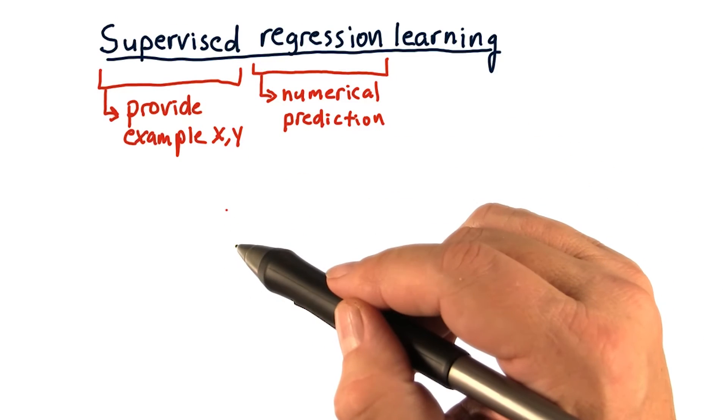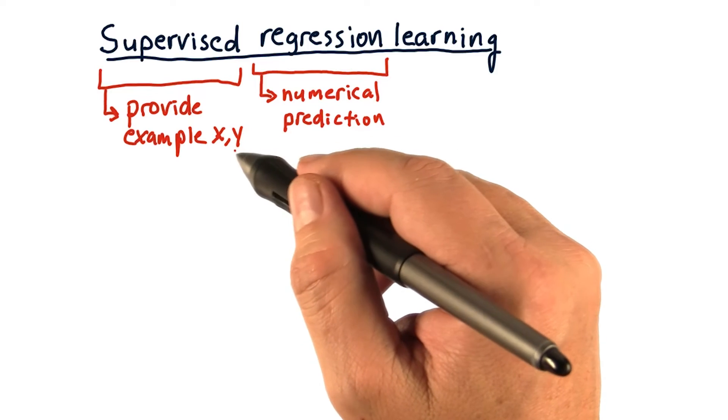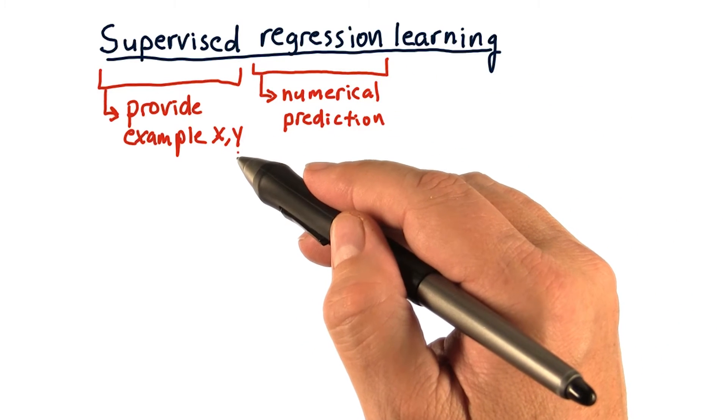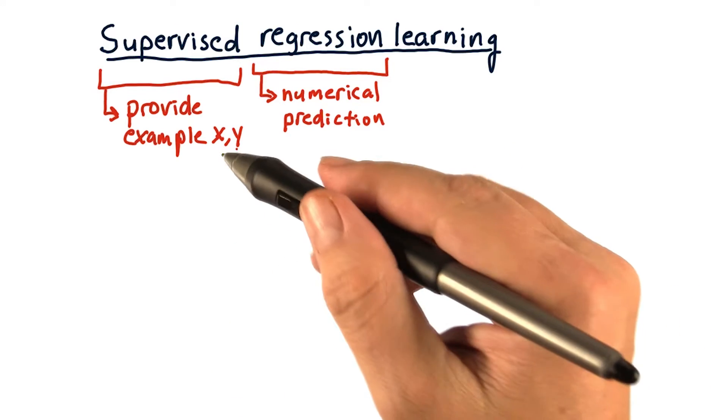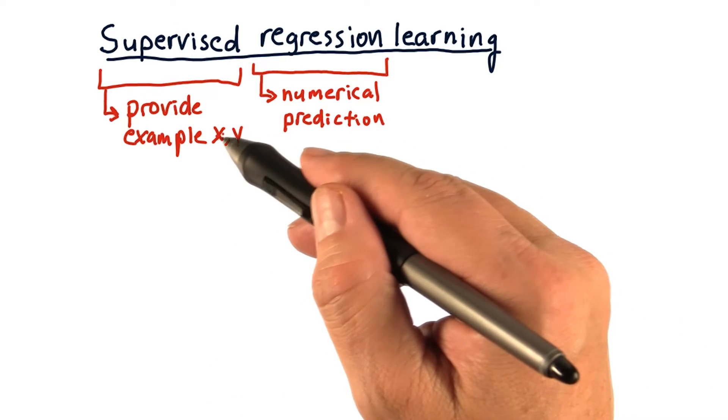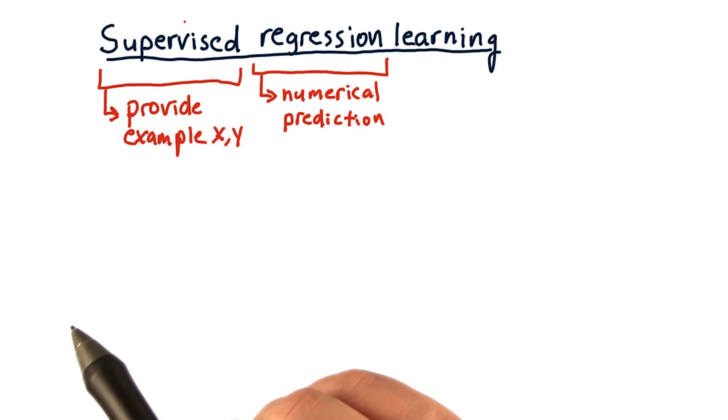Supervised means that we show the machine the x, and also, if you will, the correct answer, y. In fact, we show the machine many, many examples of x and y, and that's how it learns—okay, when I see this x, this is the y that's associated with it. That's the supervised component.